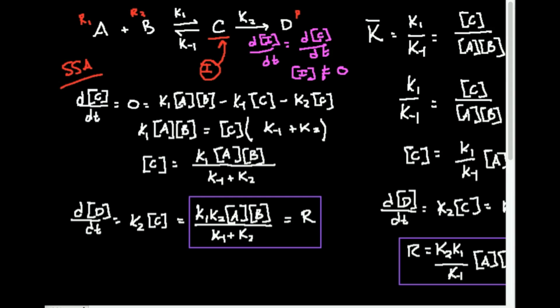So what does that really mean? There's some concentration of that intermediate, but through this equilibrium, whatever gets formed gets transformed into D. Whatever is coming in is coming out, so the concentration is really not changing with time. If the concentration doesn't change with time, then that derivative is equal to zero. We're going to set this change in intermediate concentration with respect to time equal to zero, and we can get an expression for this d[C]/dt.